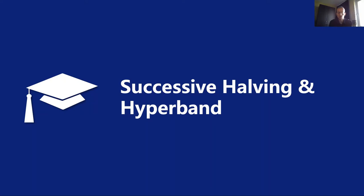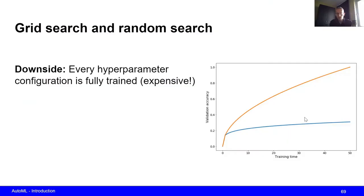Hi everyone. In the previous video we looked at two methods to perform hyperparameter optimization, namely grid search and random search. Now it turns out both of these are not very efficient in terms of computation time. Successive halving is an extension to random search that makes it more efficient, and hyperband is an extension to successive halving to deal with some of the issues that the latter has. In this video we're going to take a look at both of these methods.